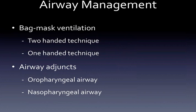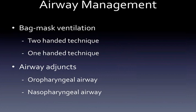After all these maneuvers, bag-mask ventilation can still be really difficult in some patients. We can put in some airway adjuncts to help keep the airway open. These are the oropharyngeal airway — more popularly known as the Guedel airway — and the nasopharyngeal airway. It's important to size these adjuncts correctly. For the oropharyngeal airway, measure from the front incisors to the angle of the mandible. For the nasopharyngeal airway, measure from the nostril to the angle of the mandible. Large males usually take a size 5, others take size 4 or 3.